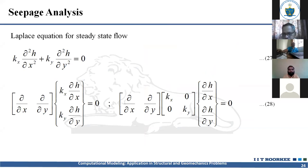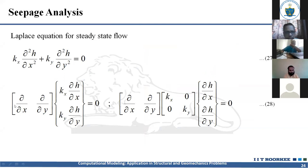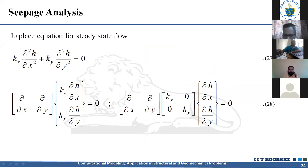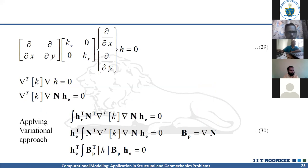The second problem is seepage. This is governed by the Laplace equation in terms of permeability kx and ky in the horizontal and vertical directions. The seepage equation is written using partial derivative operator del, applied to the permeability matrix [kx, ky] and the head gradients del h/del x and del h/del y, which by Darcy's law give velocities in x and y directions.